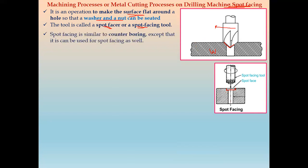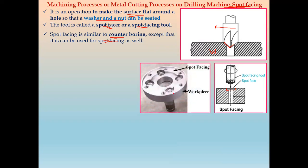Spot facing is similar to counter boring, and counter boring can also be used for spot facing. The main difference is that in counter boring the depth is greater, while in spot facing the depth is smaller. The spot facing operation allows a washer or nut to be seated inside the hole.